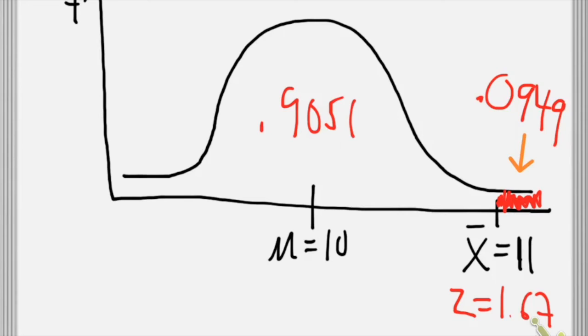Put it another way, we could say that's 9.049% of the randomly selected samples from this population with an N of 25.